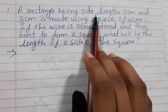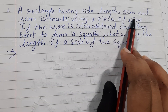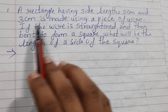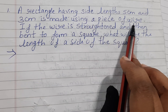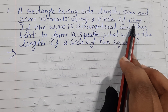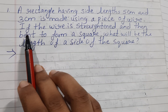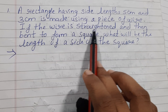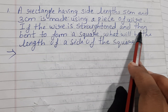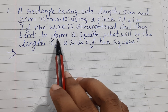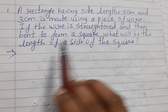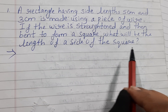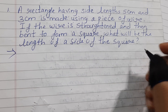A rectangle having side length 5 cm and 3 cm is made using a piece of wire. If the wire is straightened and then bent to form a square, what will be the length of the side of the square?